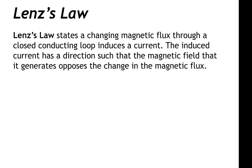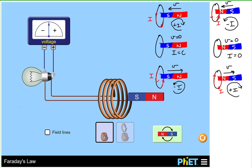Let's go back to our simulation and look at the magnetic field that the current in each of these scenarios generates. We could figure out the magnetic field direction of the current loops by using the right-hand rule, so let's remind ourselves of the right-hand rule for these scenarios.